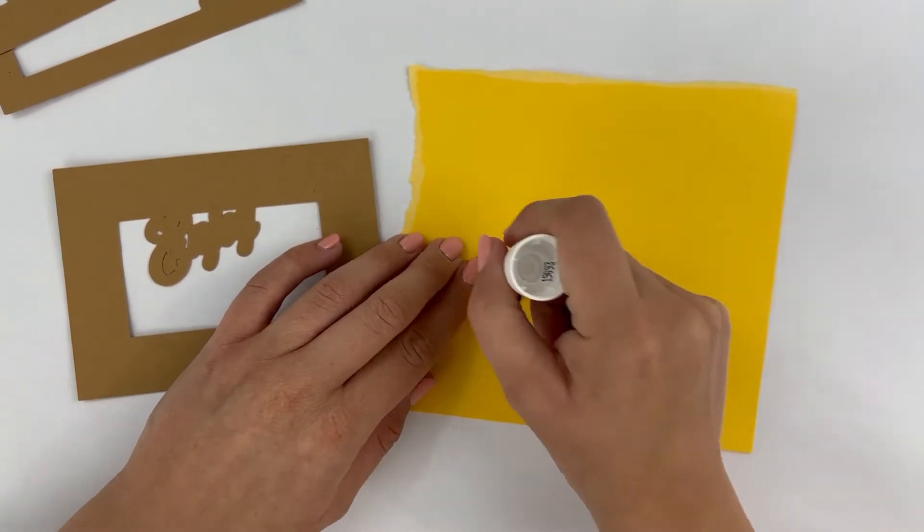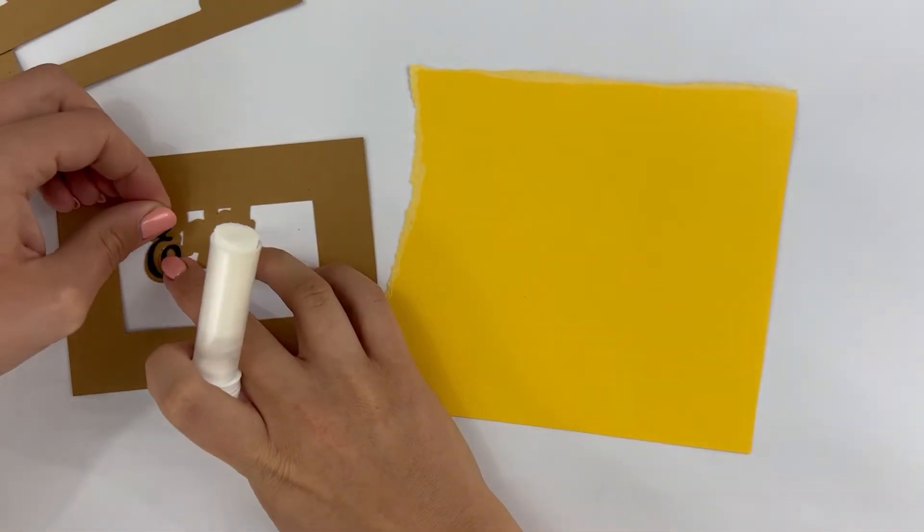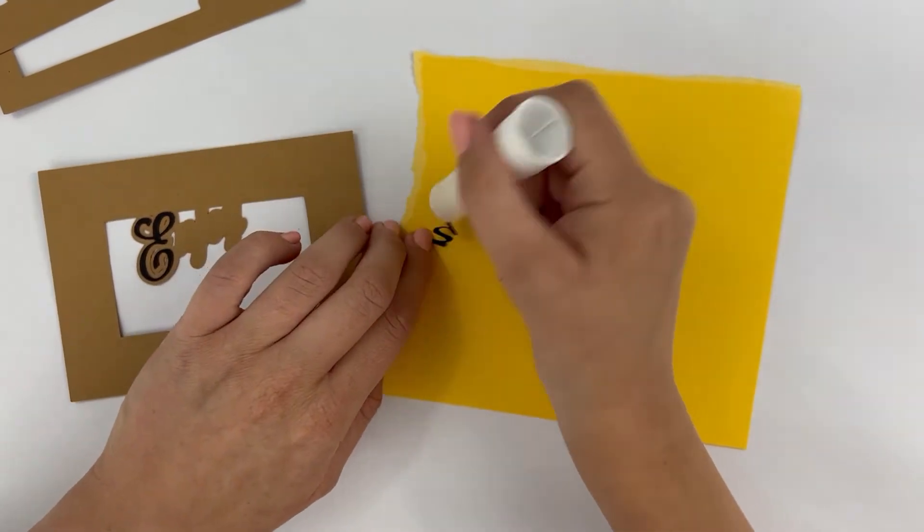Today I'm using a standard Elmer's glue stick as well as some 3D adhesive tape that you can purchase from your local craft store.